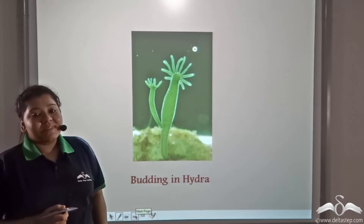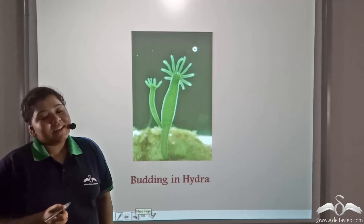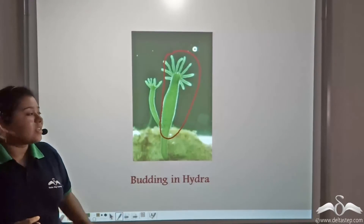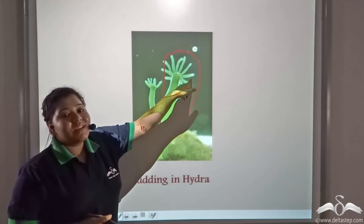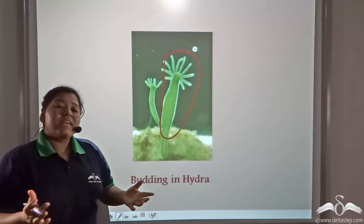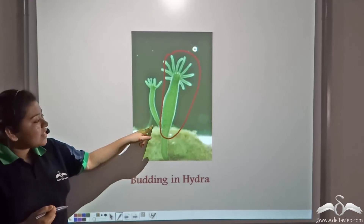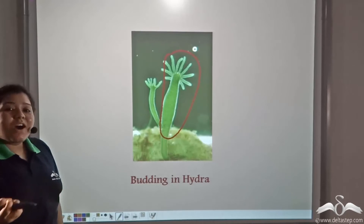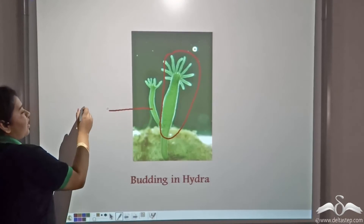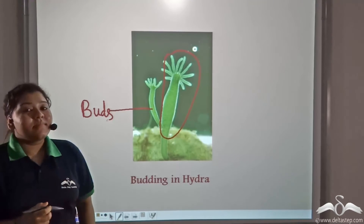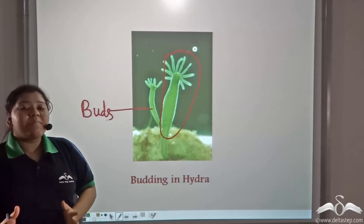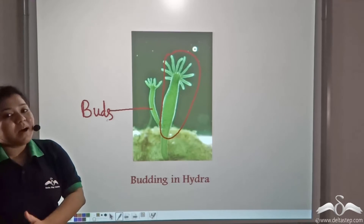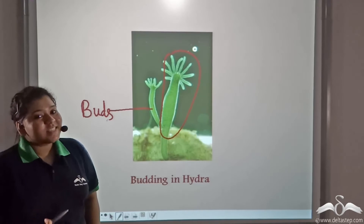Now look at this living organism known as hydra, which lives under the oceans. It has a cylindrical body and hair-like structures known as tentacles near its mouth, which help in feeding and digestion. These outgrowths that come out of the hydra are known as buds. These buds separate from their parent body and form a new hydra. This kind of asexual reproduction that occurs from a bud is known as budding, and budding takes place in hydra.